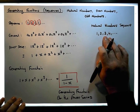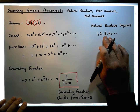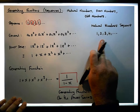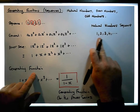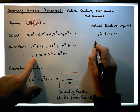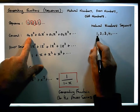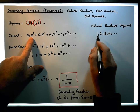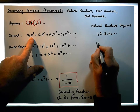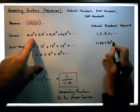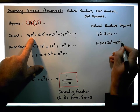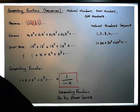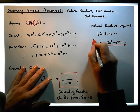What we would really like to have is the generating power series. The generating power series is straightforward in this case. The first term is a one, so a-zero becomes a one. This gives us one plus 2x plus 3x squared plus 4x cubed, and so on off to infinity. This here would be its generating power series.